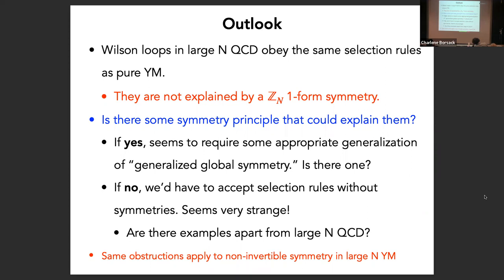Question: Could you perhaps say that there is a sector of large N QCD involving only gluonic operators but not open Wilson lines, and that in that sector there is this symmetry? No — the reason is that the topological operators are gluonic operators, and if that scenario were to be realized, they would be perfectly topological in all correlation functions with just closed Wilson loops. But that on its own doesn't seem to be the case. It's not just the existence of the open Wilson line — it's more general.